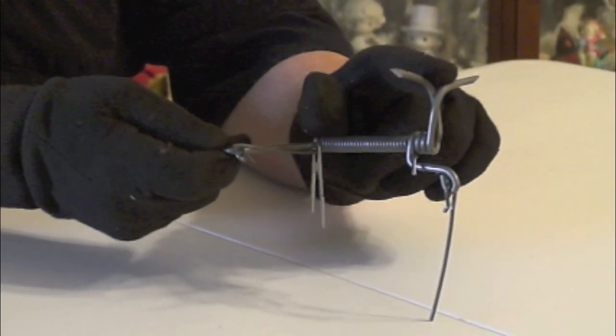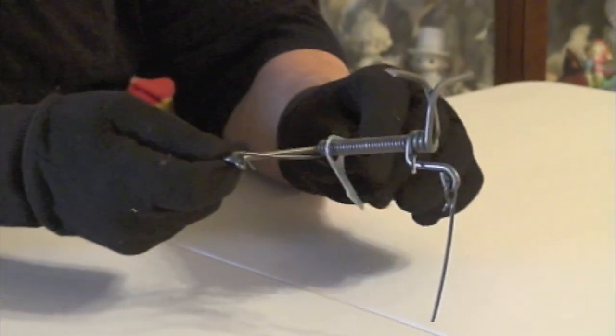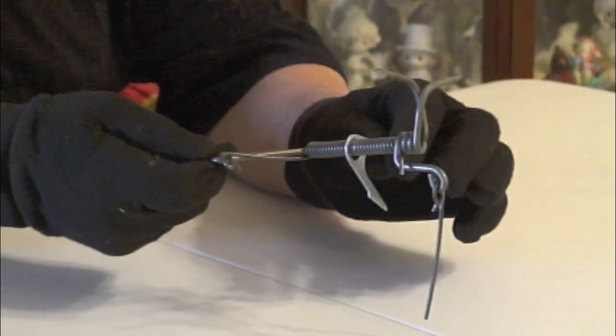These are the jaws. When they're in the open position in a moment, you will see more how they work. The trip is what actually trips the trap.